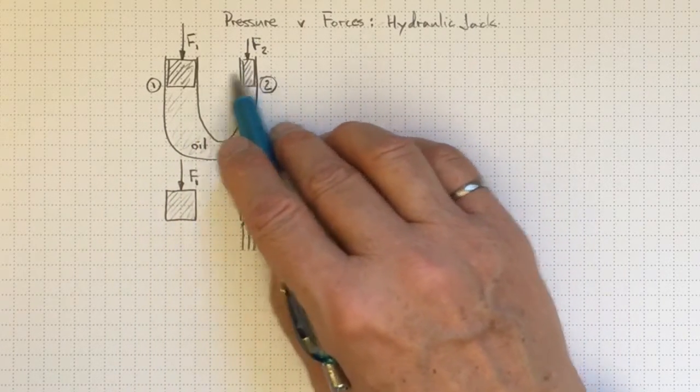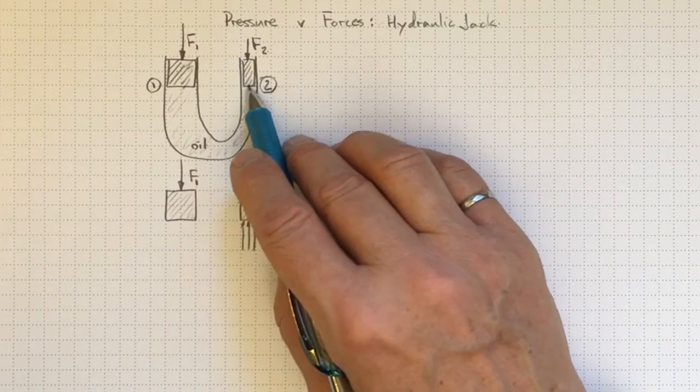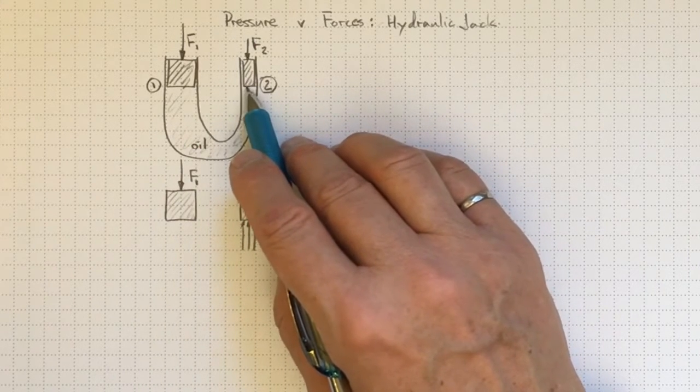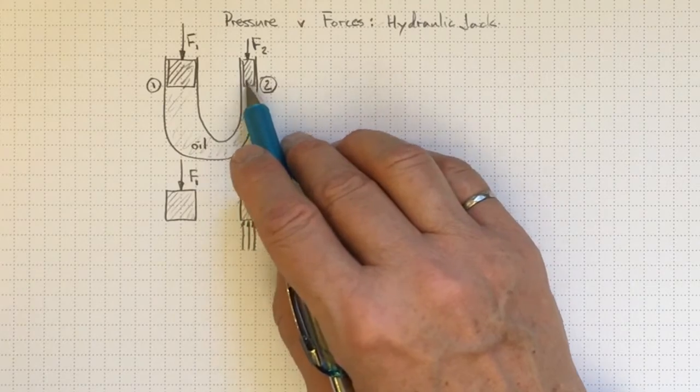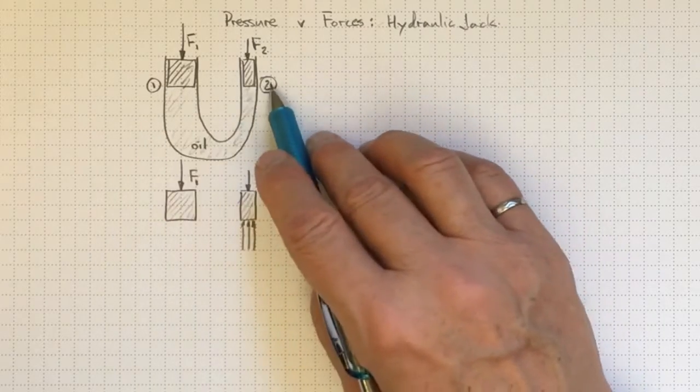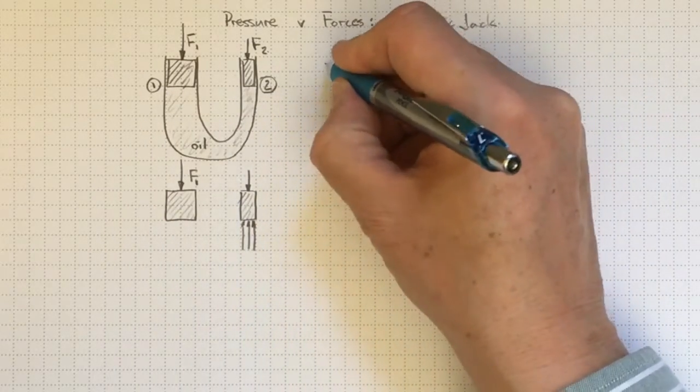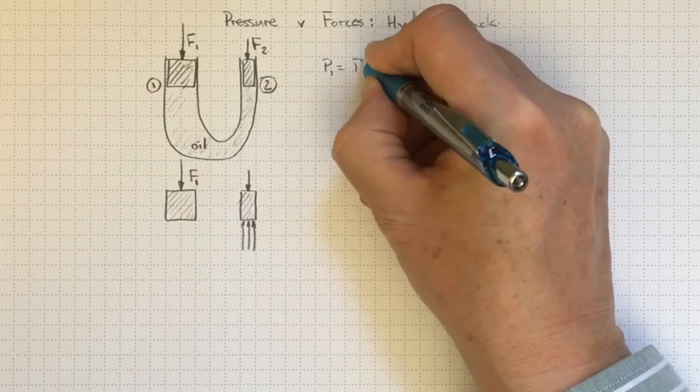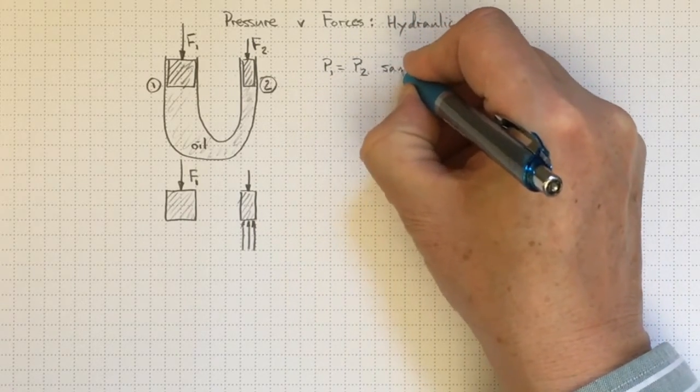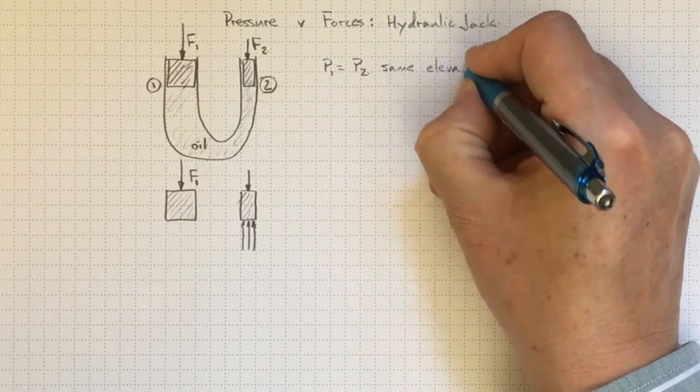If we simplify to make sure these pistons are exactly the same elevation, which is not a terribly bad simplification, then we can look at locations one and two at the same elevation and see that P1 is equal to P2 because we're at the same elevation.